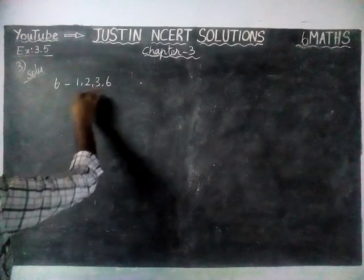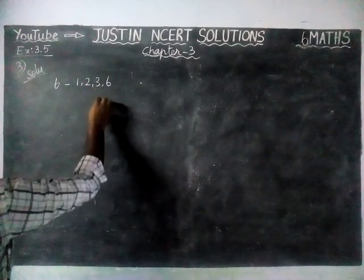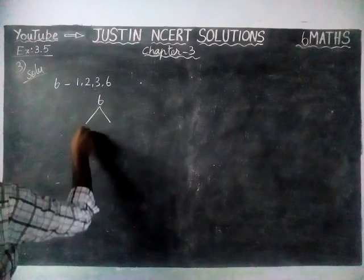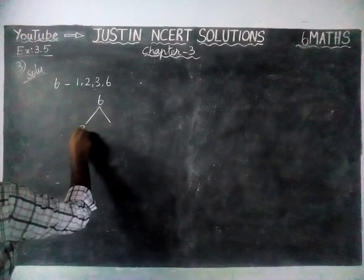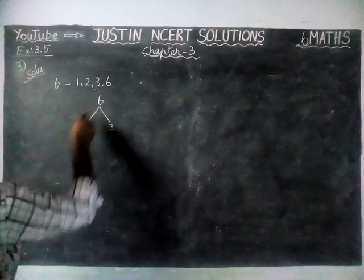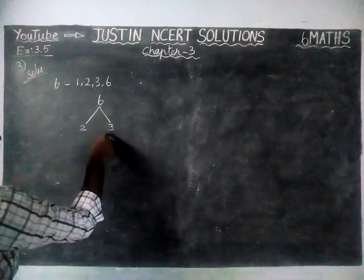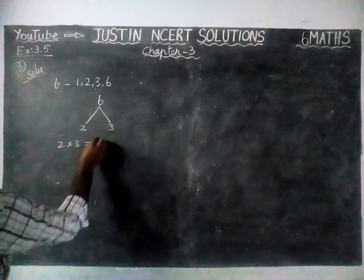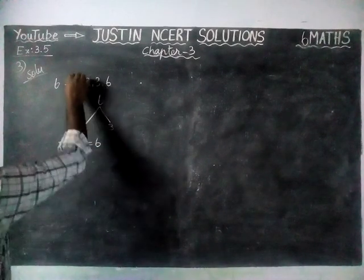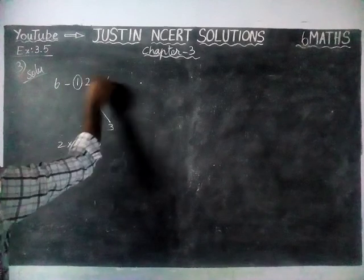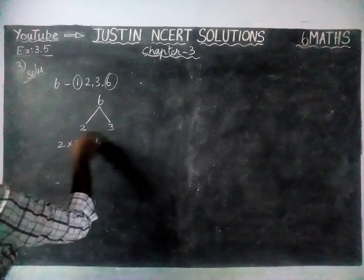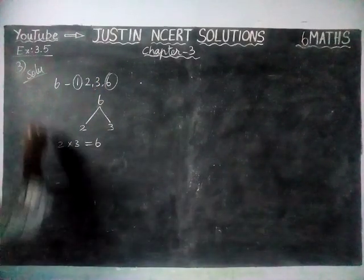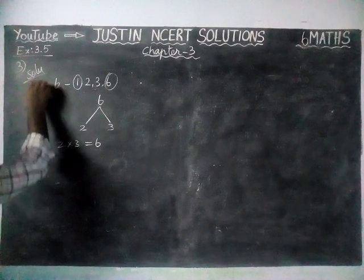Now we are going to factorize by using the factor tree method. 6 equals 2 into 3. Both 2 and 3 are prime numbers, so 2 into 3 is equal to 6. Here, 1 and 6 are not included. That's the first example.